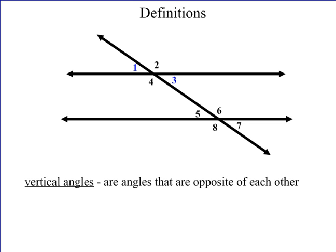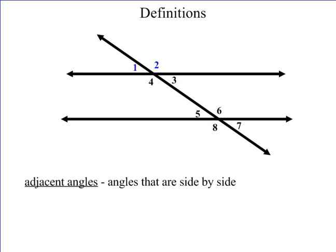Now let's talk about vertical angles. Vertical angles are angles that are opposite of each other. Here we have angles one and three — they are opposite one another. Angles two and four are opposite each other. Angles six and eight are opposite each other, and angles five and seven are also opposite each other. Vertical angles are also congruent, so it's important to know which ones are congruent and which ones are not.